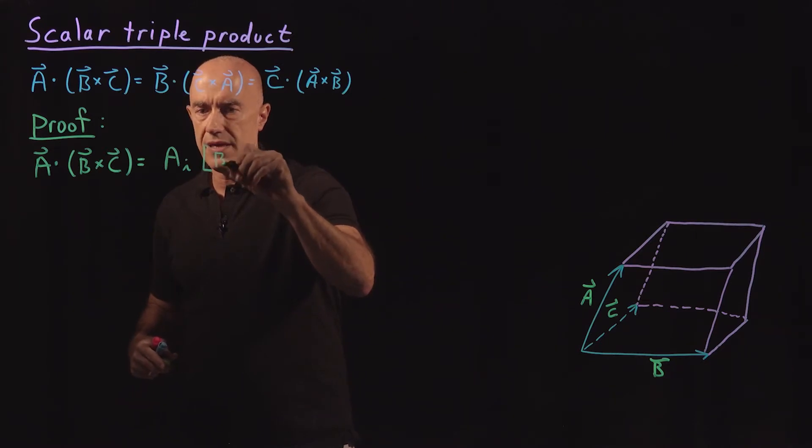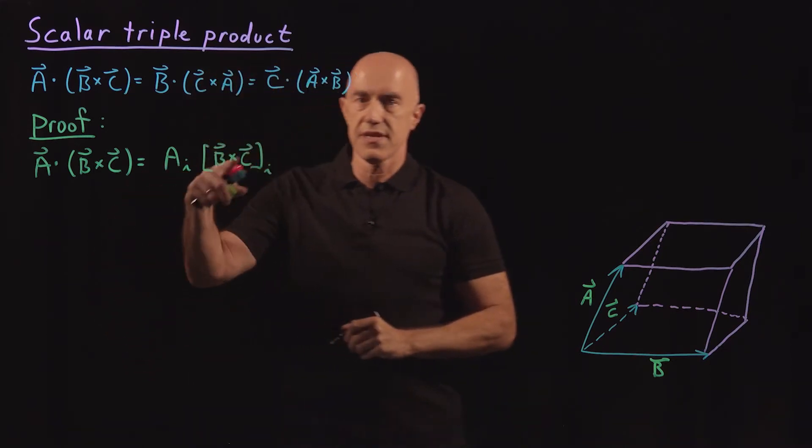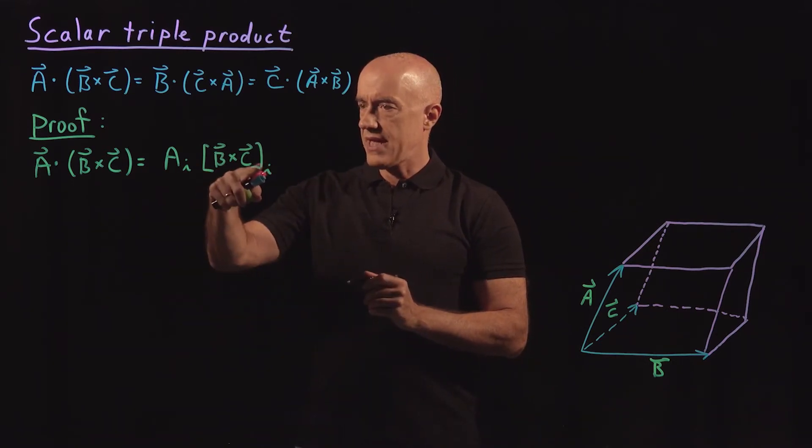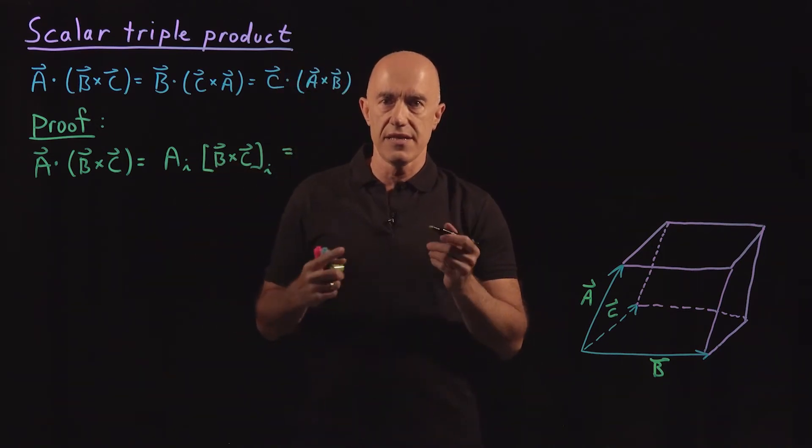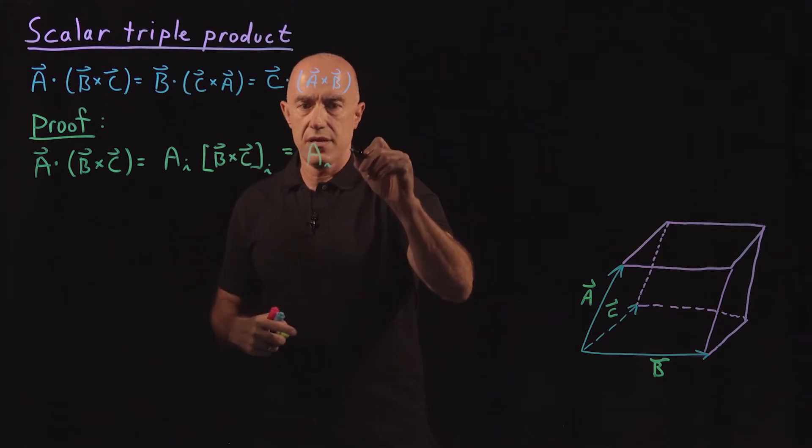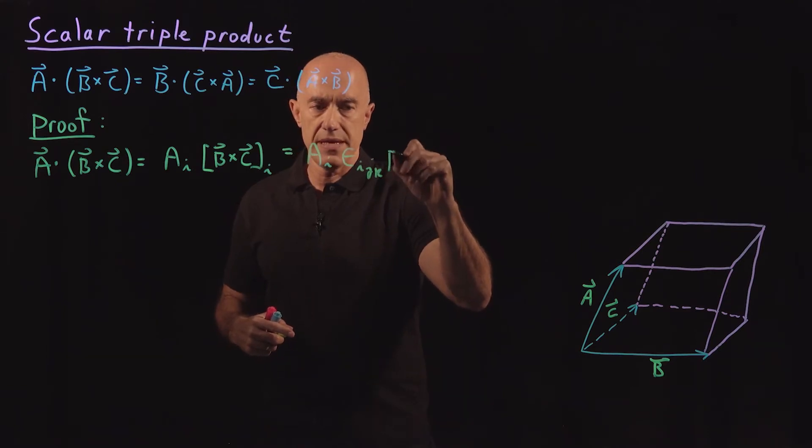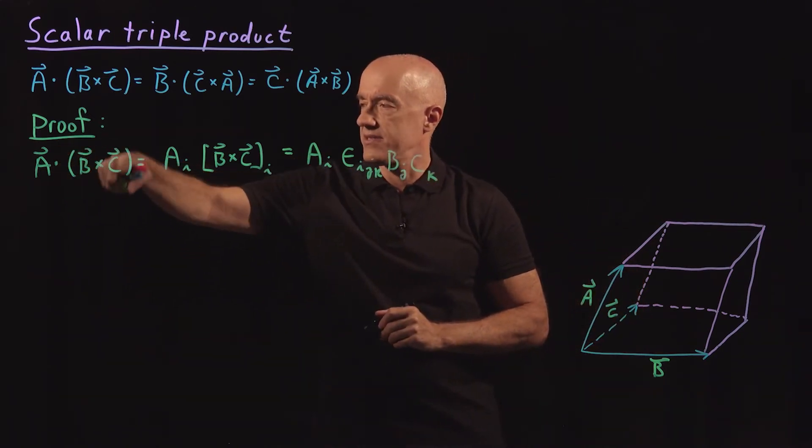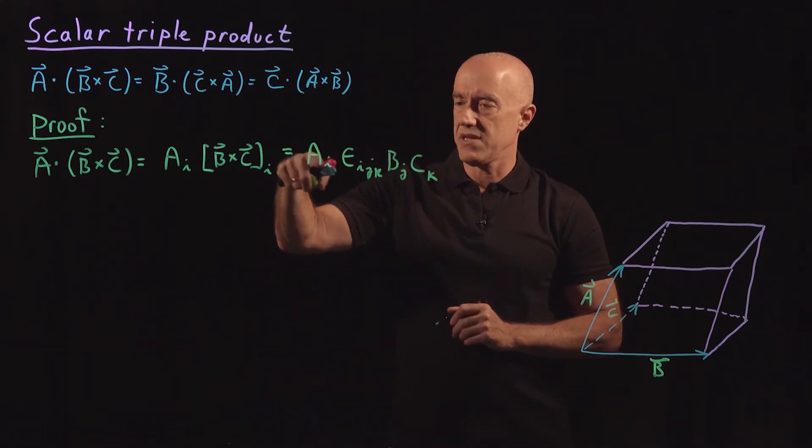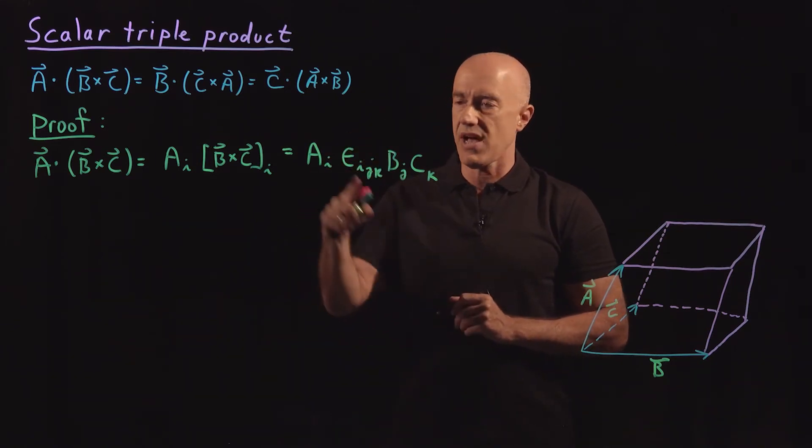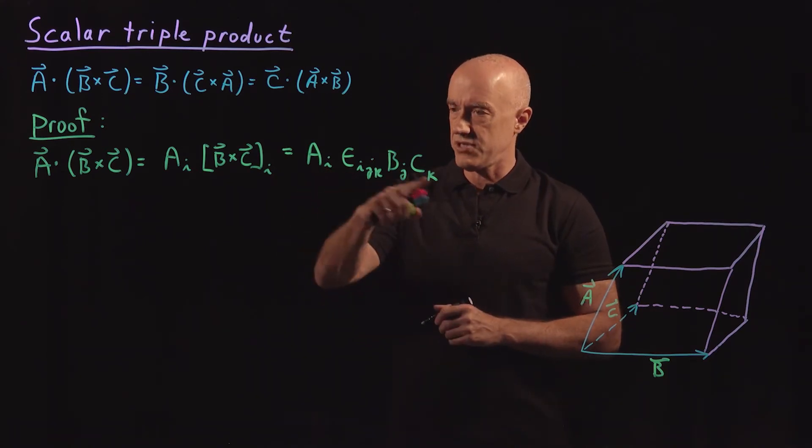So this is B cross C, the ith component. So we're summing now over the I equals one, two, and three. We can then write the cross product using the Levi-Civita symbol. So this would be AI. And then B cross C, the ith component will be Epsilon I, J, K, B_J, C_K. So now we've broken down this scalar simply in terms of the components of A, B, and C and this Levi-Civita symbol. So here we're summing over I, we're summing over J and we're summing over K. So there's three summation signs here which we don't write because we're using the Einstein Summation Convention.